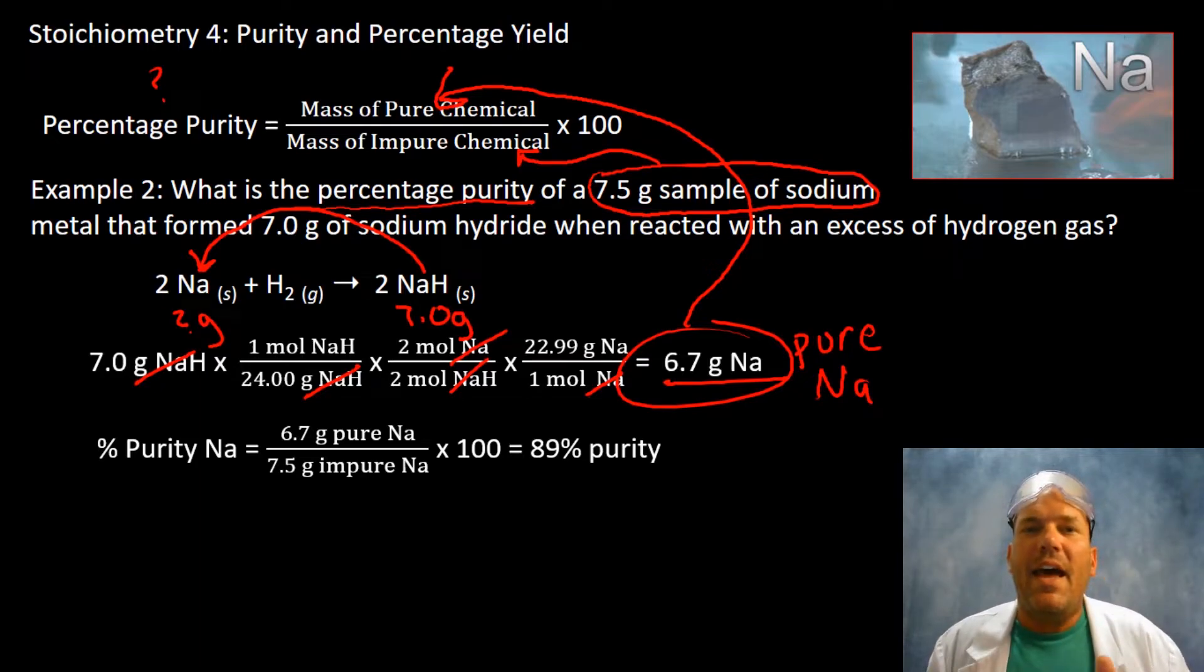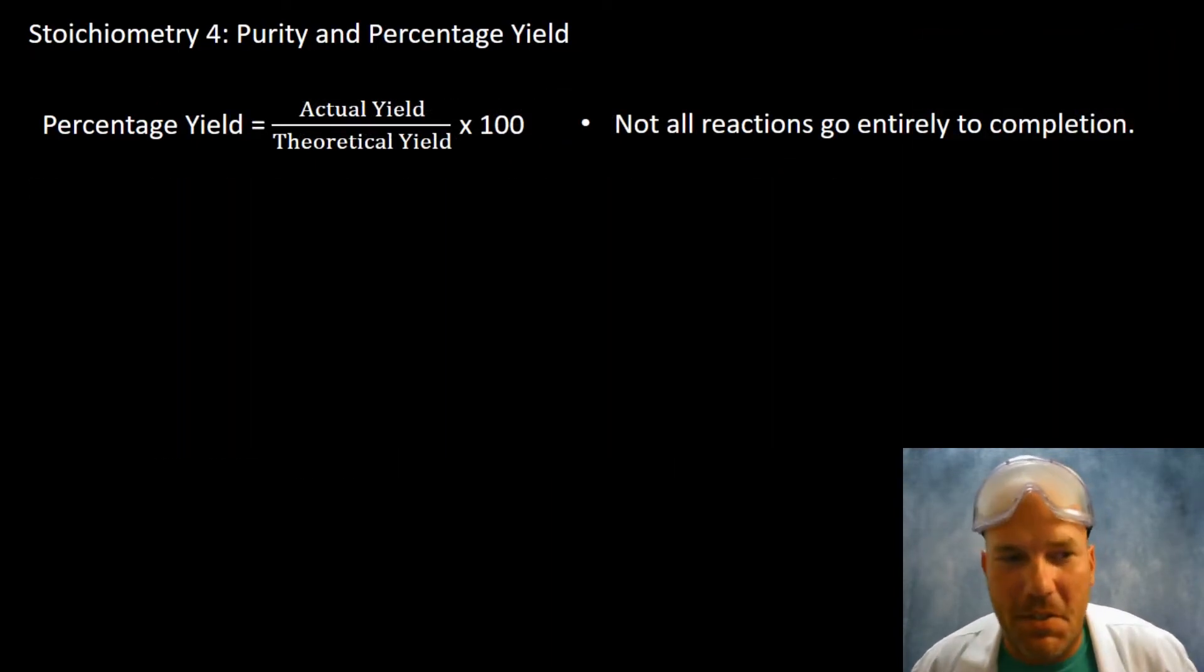Percentage yield. Percentage yield is expressed using the actual yield divided by the theoretical yield. Actual yield - let me tell you some terms that we may see. Instead of actual yield you may see experimental yield, especially in lab. We're going to do a lab with this, imagine that. So experimentally how much did you yield or produce? Theoretical is what you calculate using stoichiometry. Ideally, theoretically, how much will you produce?